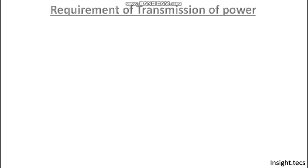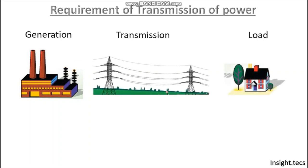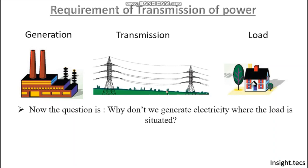Today we will learn what is the requirement of transmission of power. Generally, electricity reaches our home after going through three general processes: power generation, power transmission, and power distribution at the load end. The question may arise: why do we not generate electricity at the load end itself? The first reason is the huge area requirement — a generating station requires a huge area which may not be possible in the city area.